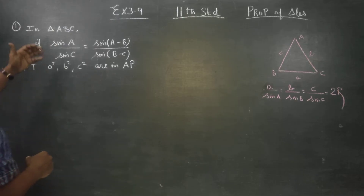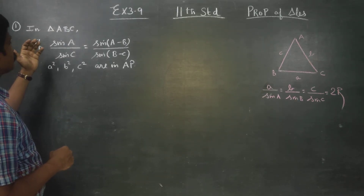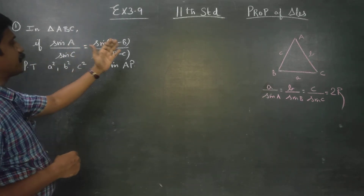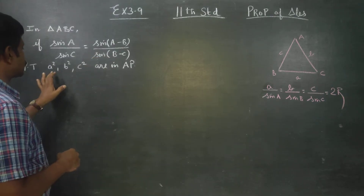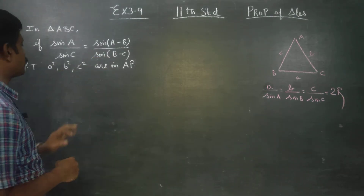We have to prove: if sinA / sinC is equal to sin(A-B) / sin(B-C), then a², b², c² are in AP.